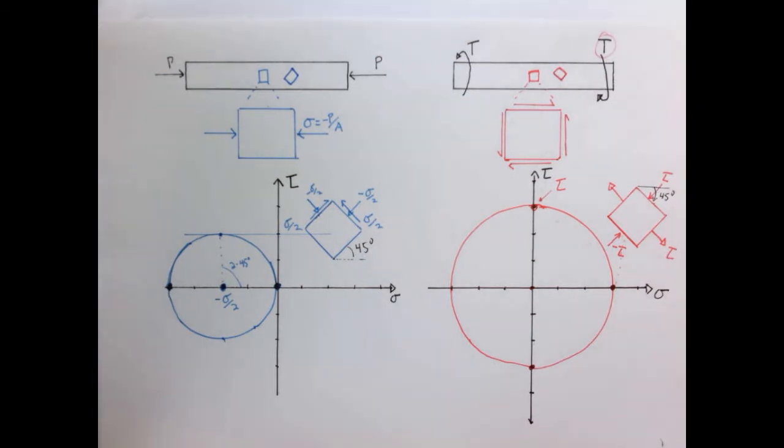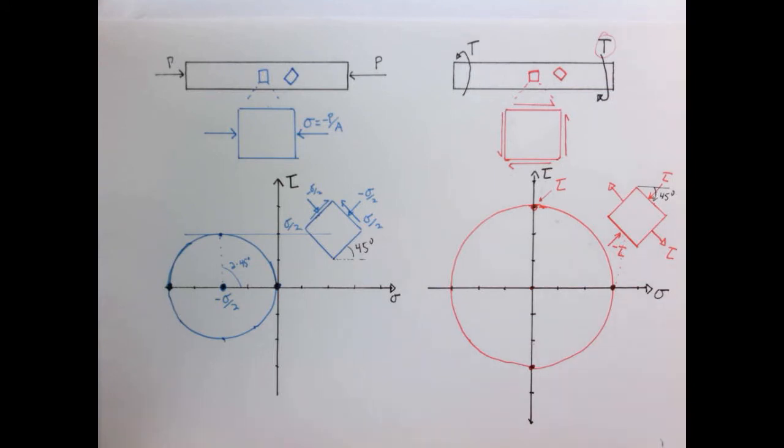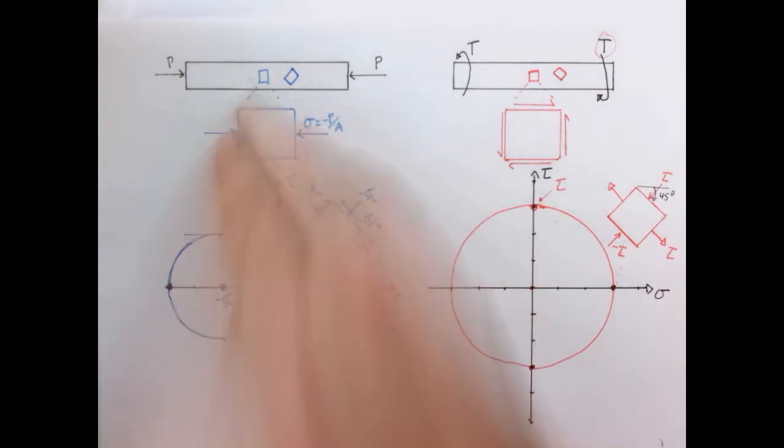So two classic cases of using Mohr's circle to understand the state of stress of an arbitrary element that we've extracted from beams under different loadings. And again, all these forces and stresses represent are what would have to be the forces acting on a hole of this kind of shape right here to keep the rest of the forces internal to the beam the same.